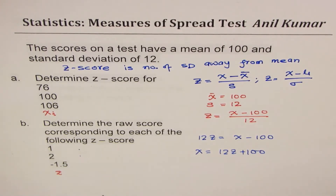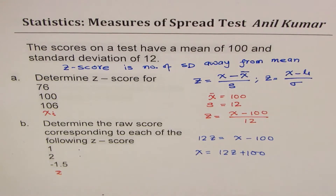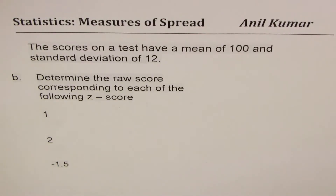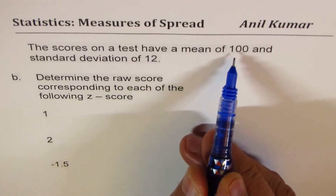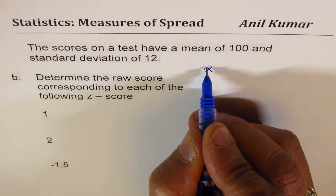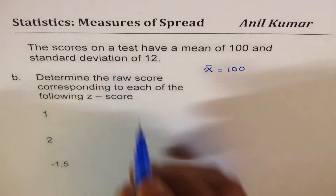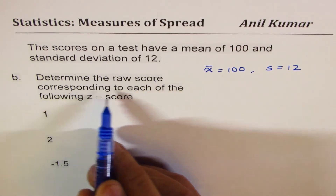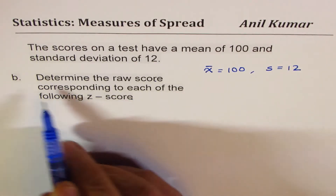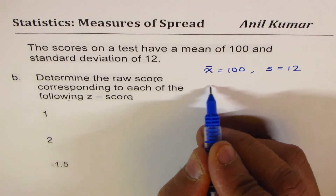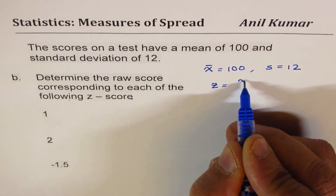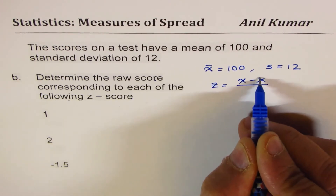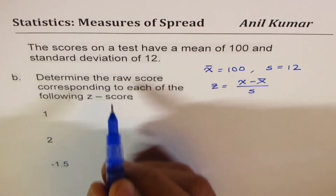So you can get all these values. Let's do these calculations and write down the answers — you can check with your results. The scores on the test have mean of 100 and standard deviation S is 12. We will do reverse calculation. The formula is that Z-score equals raw score minus mean over standard deviation.